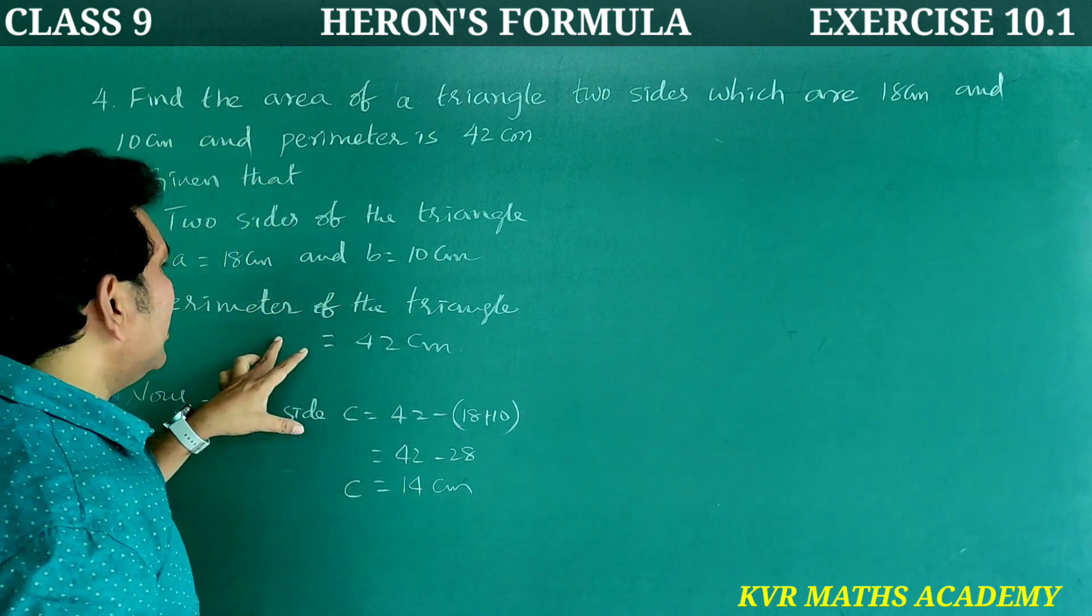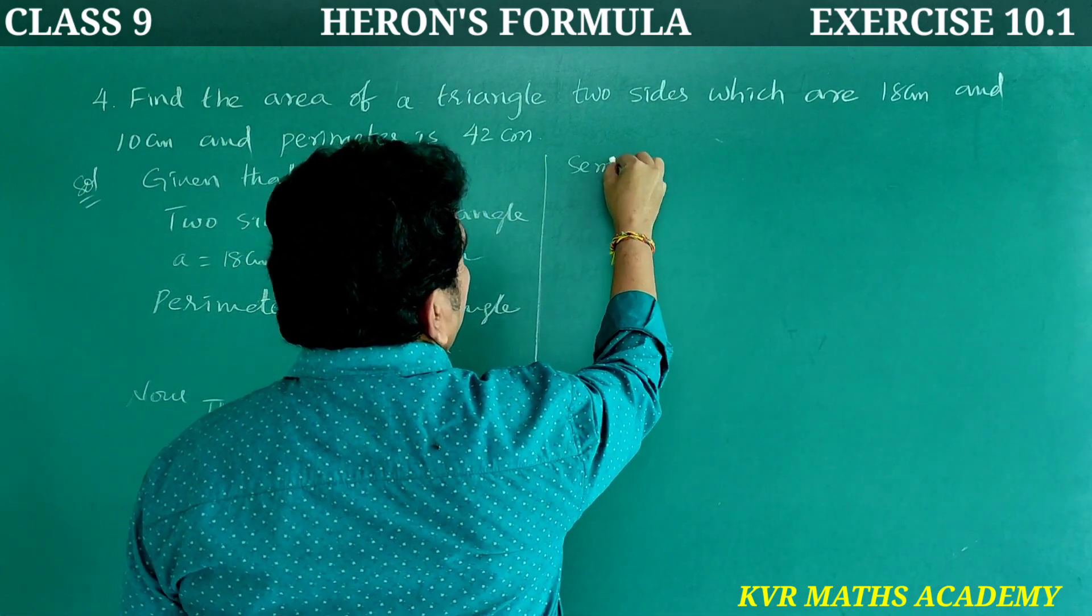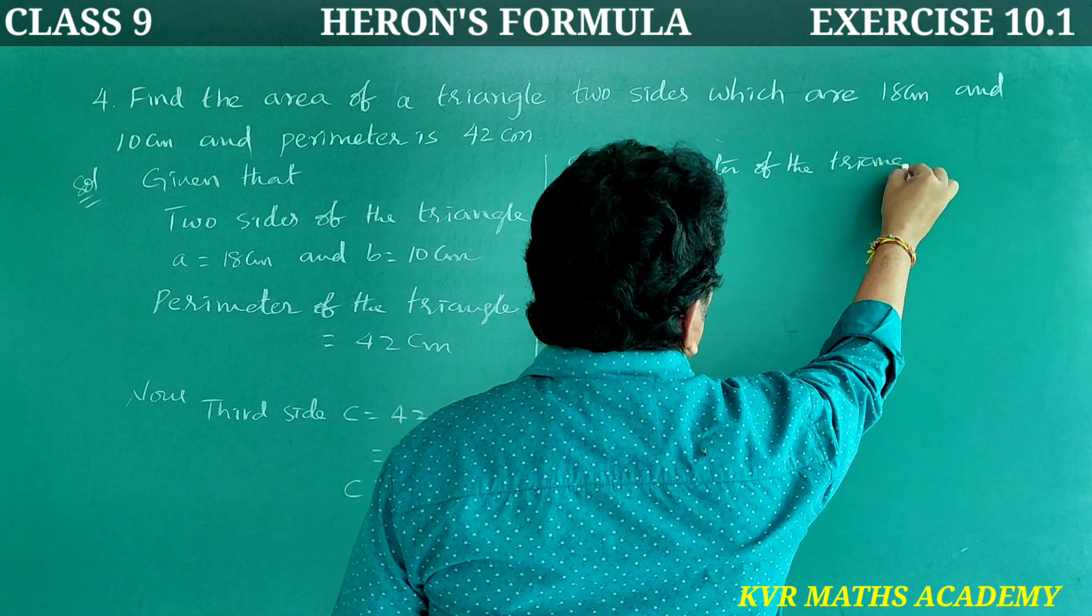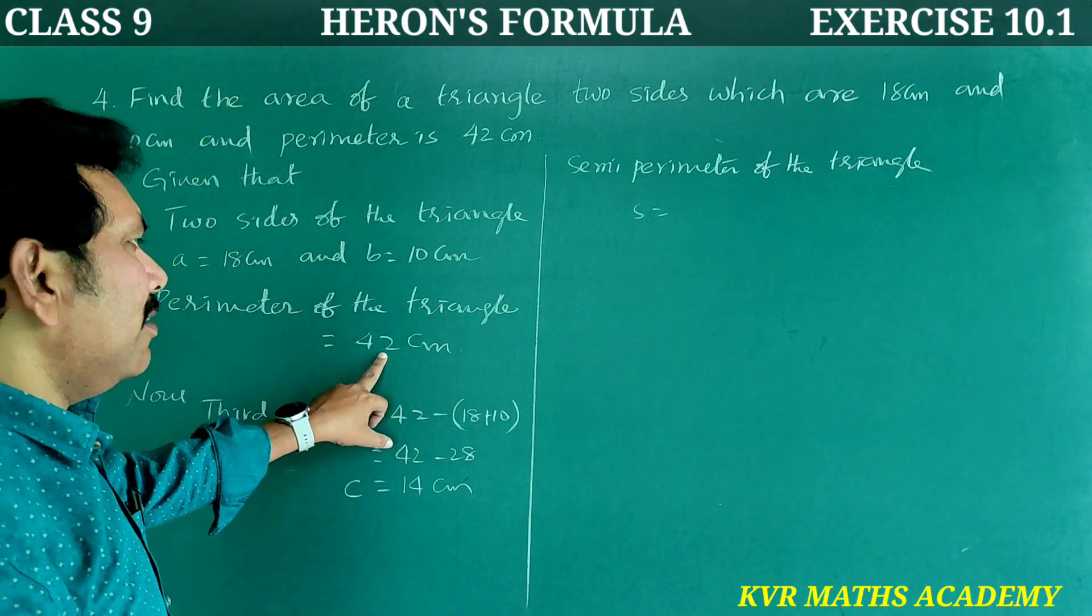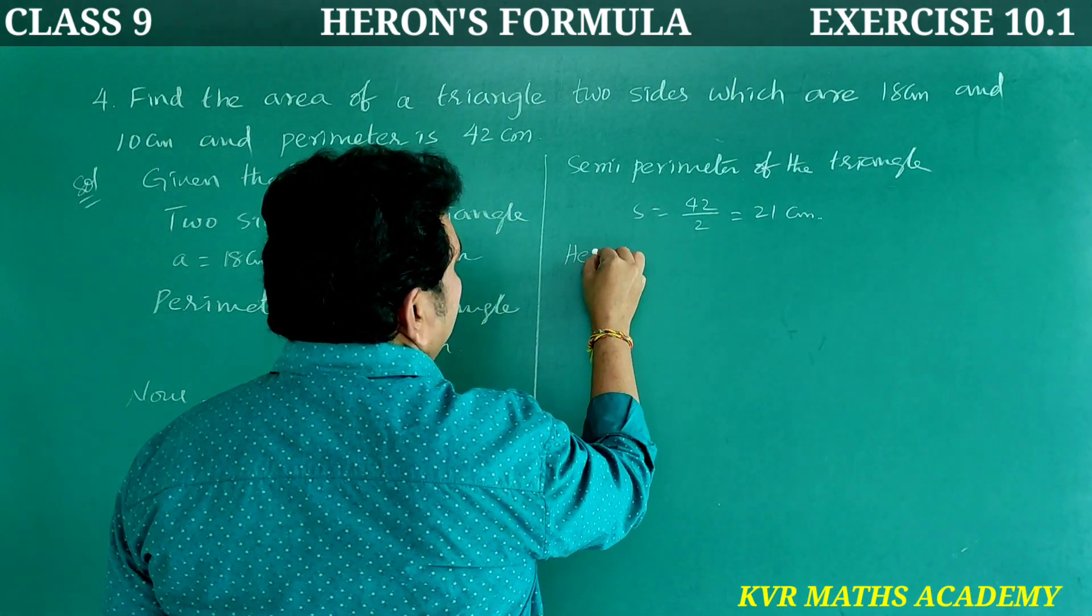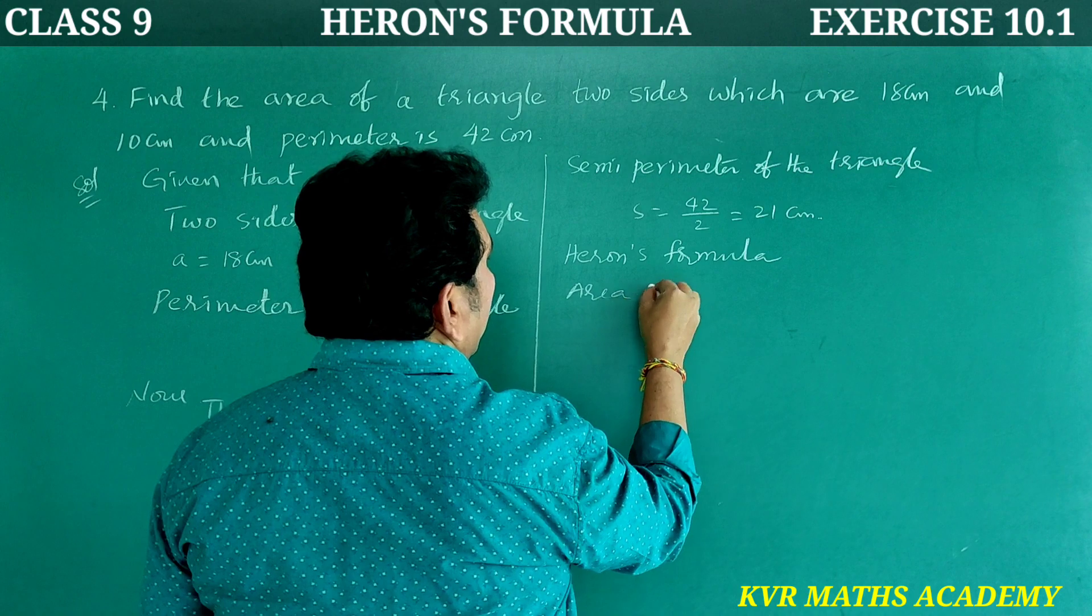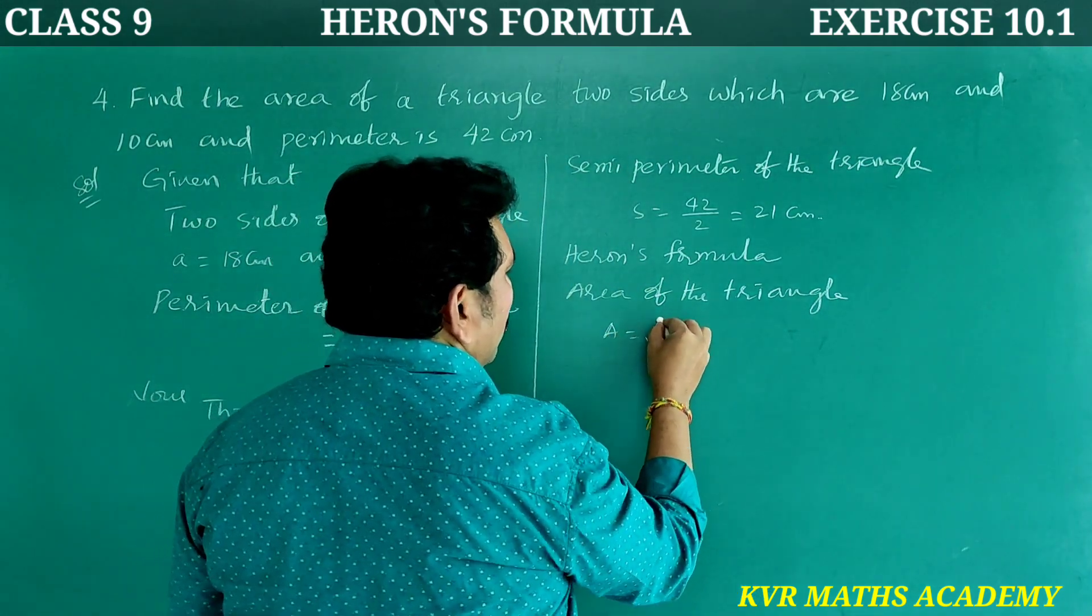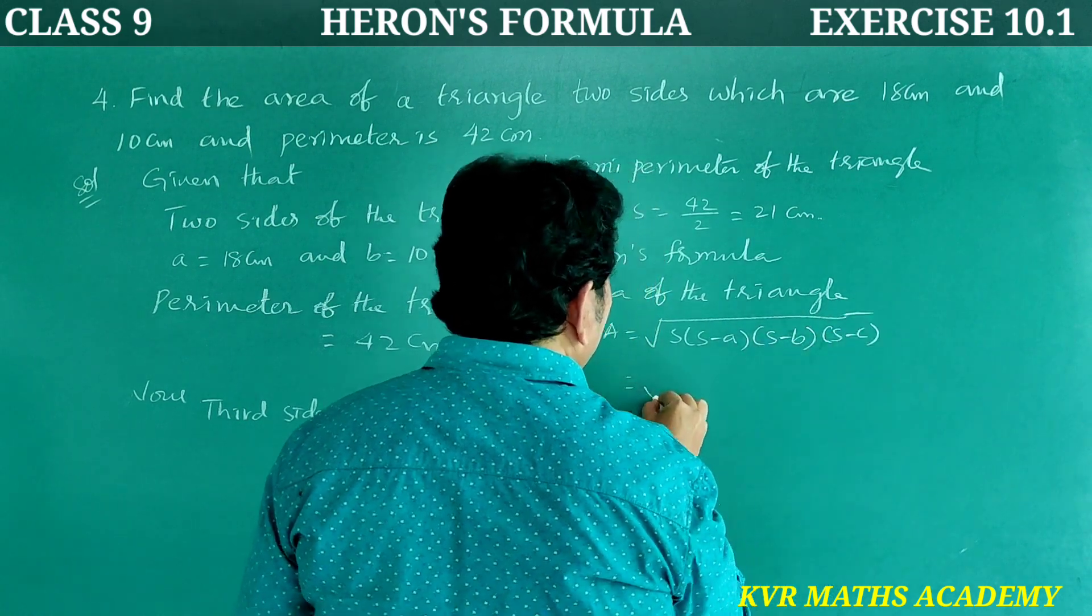Now semi perimeter of the triangle S is equal to A plus B plus C by 2. Actually already perimeter is equal to 42 so directly 42 by 2 that is 21 centimeters. Right. Using Heron's formula, area of the triangle A is equal to root of S into S minus A into S minus B into S minus C.